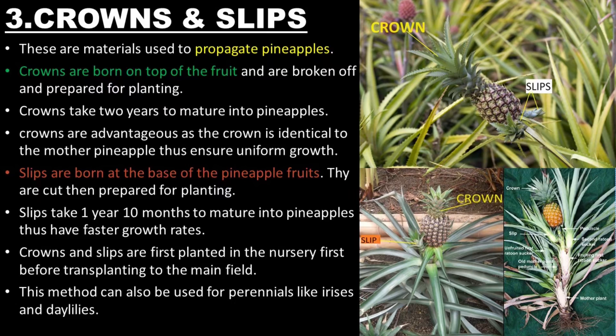Slips are born at the base of the pineapple fruit. They are cut then prepared for planting. Slips take one year and ten months to mature into pineapples, thus have faster growth rates compared to crowns. Crowns and slips are first planted in the nursery before transplanting to the main field. This method can also be used for perennials like irises and daylilies.